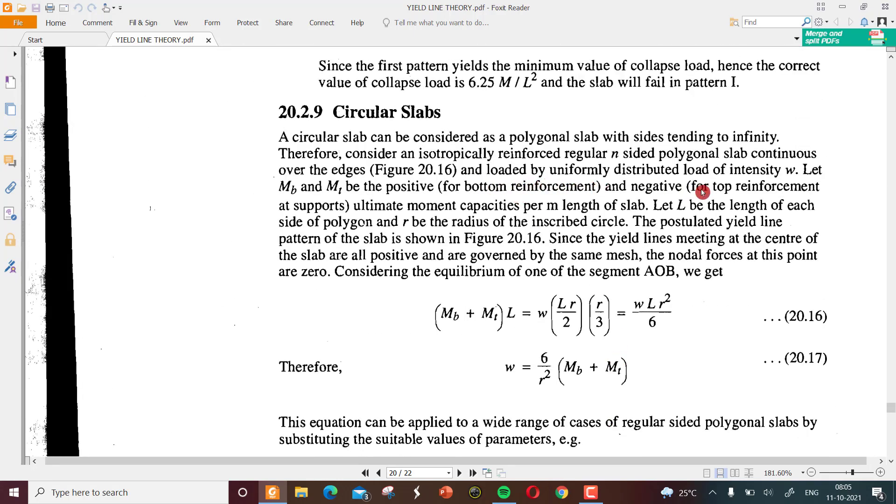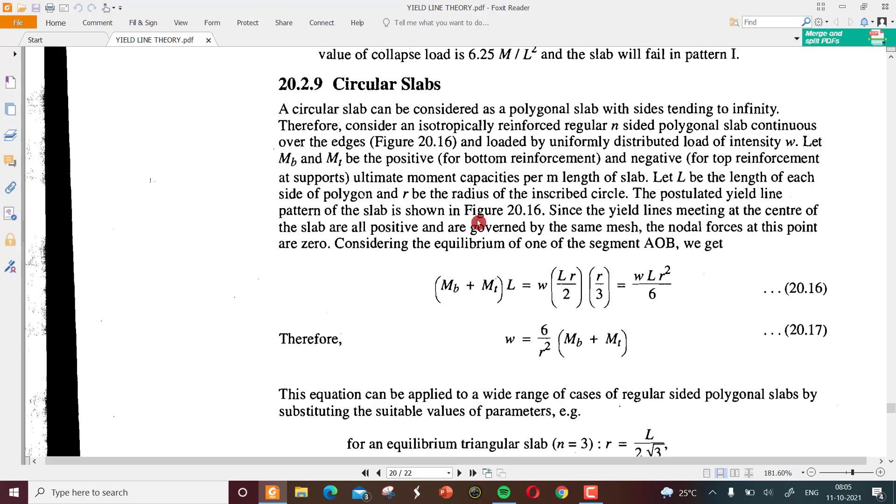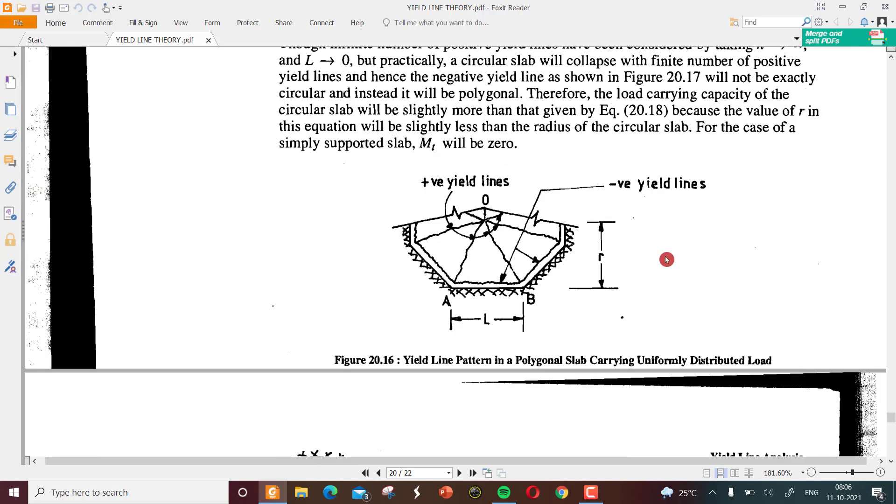Under uniformly distributed load of intensity w, let M_b and M_t be the positive moment for the bottom reinforcement and negative for top reinforcement at the supports - ultimate moment capacities per meter of the slab. Let l be the length of each side of polygon and r be the radius of the inscribed circle.